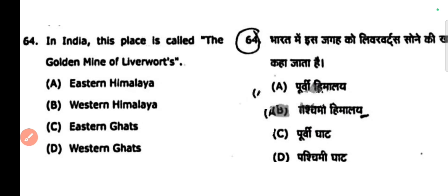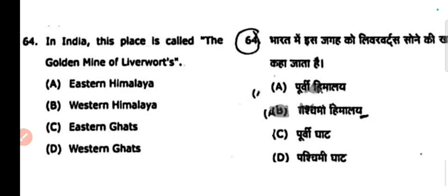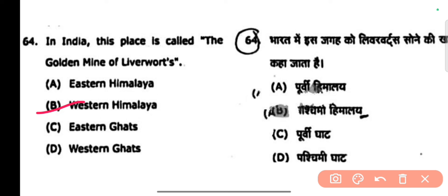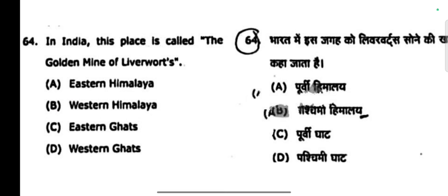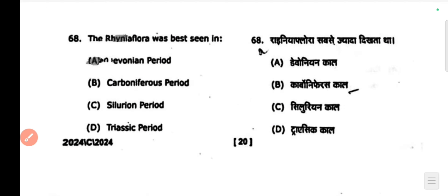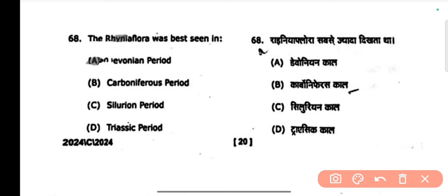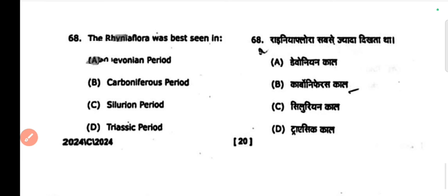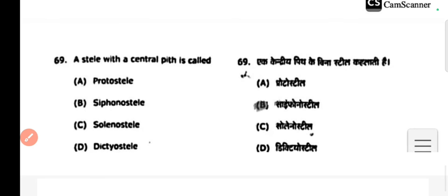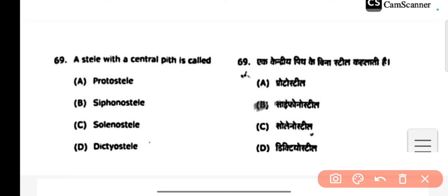In India, this place is called the golden mine of liverworts — the correct answer is Western Himalaya. Next question: the rain flora was best seen in — the correct answer is Devonian period. Next question: a stele with a central pith is called a siphonostele.